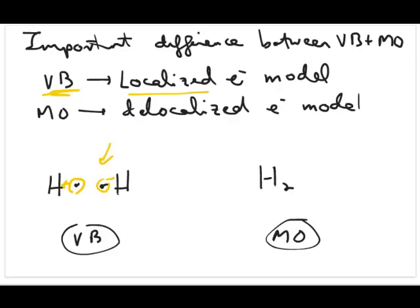So this electron belongs to that, and this electron belongs to this one. So in other words, the electron is localized to specific atoms.